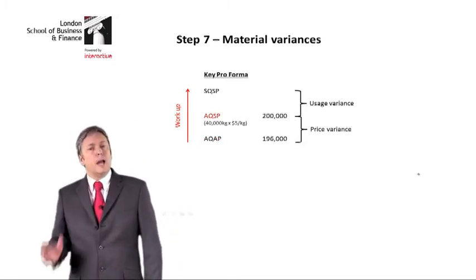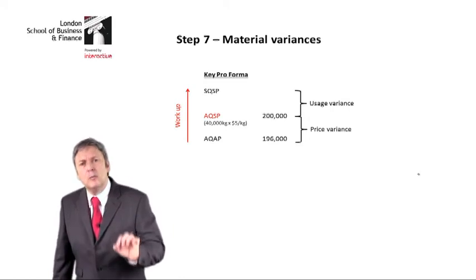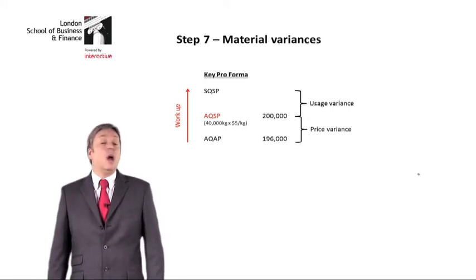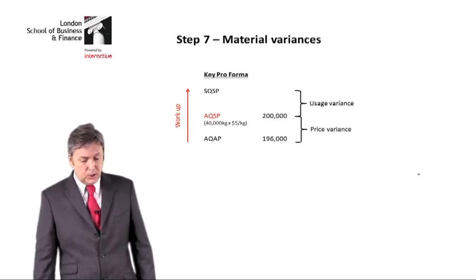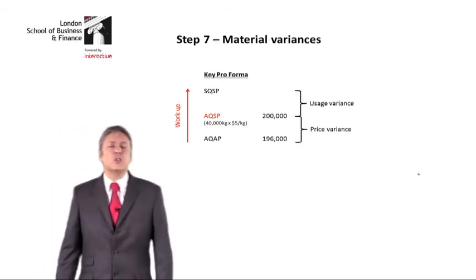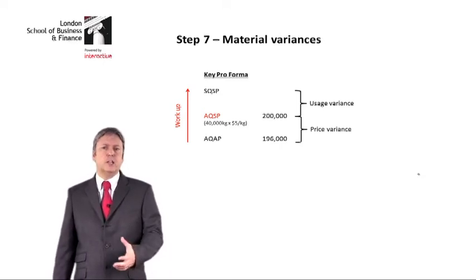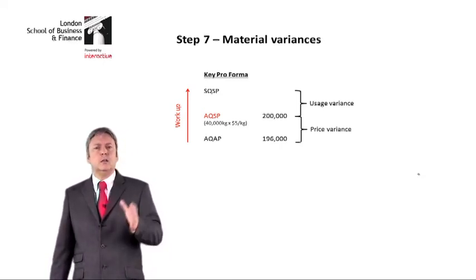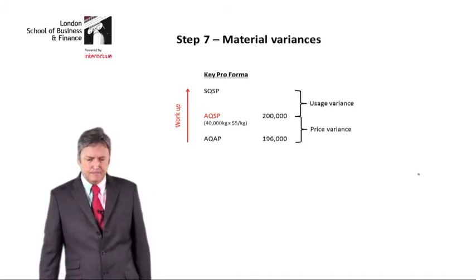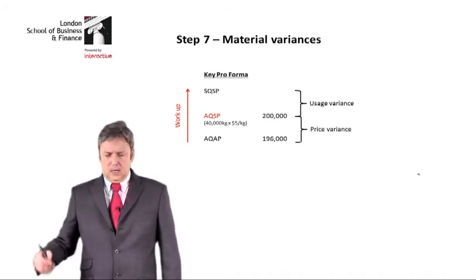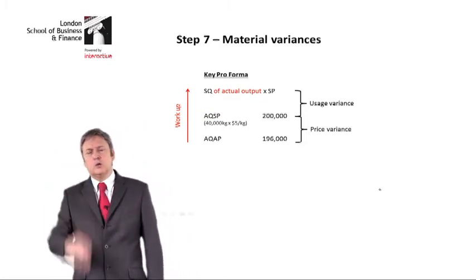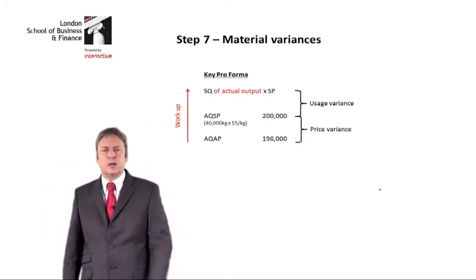The next one: actual quantity. How much material did we use? We're told that we purchased and used 40,000 kilos, and we multiply that by the standard price — the price per kilo that we expected to pay. And then finally we've got the top one: standard quantity, standard price.